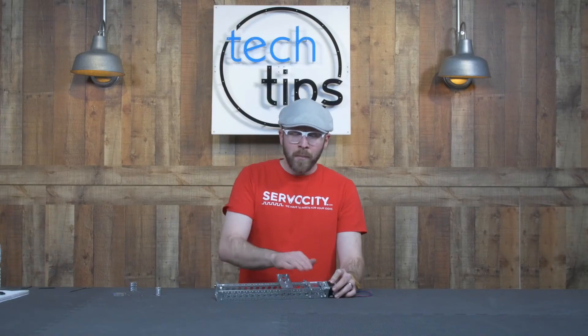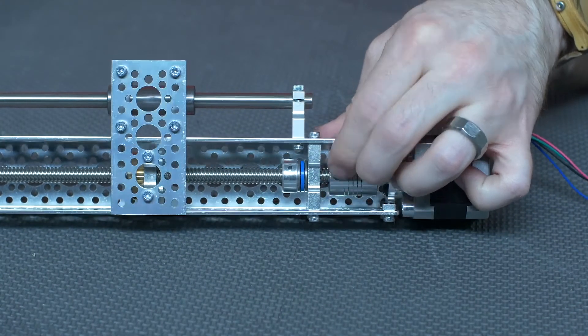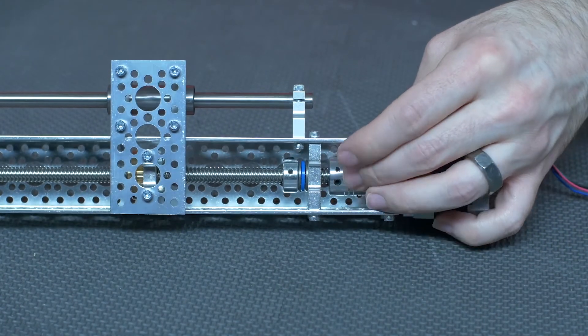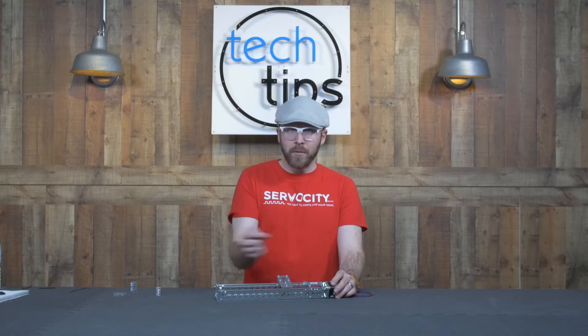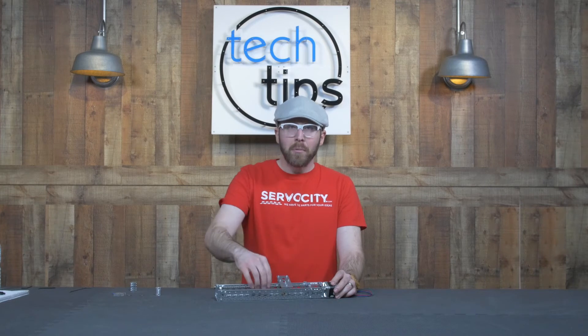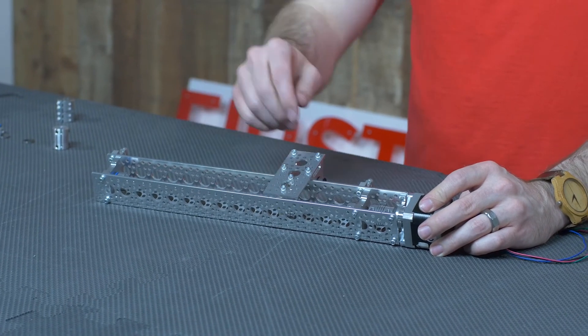So as you can see in my assembly, I have a thrust bearing at either end of the lead screw. One supports it in one direction, and the other supports the load in the other direction. This takes all axial loads that may be applied to the lead screw completely off of the flex coupler.